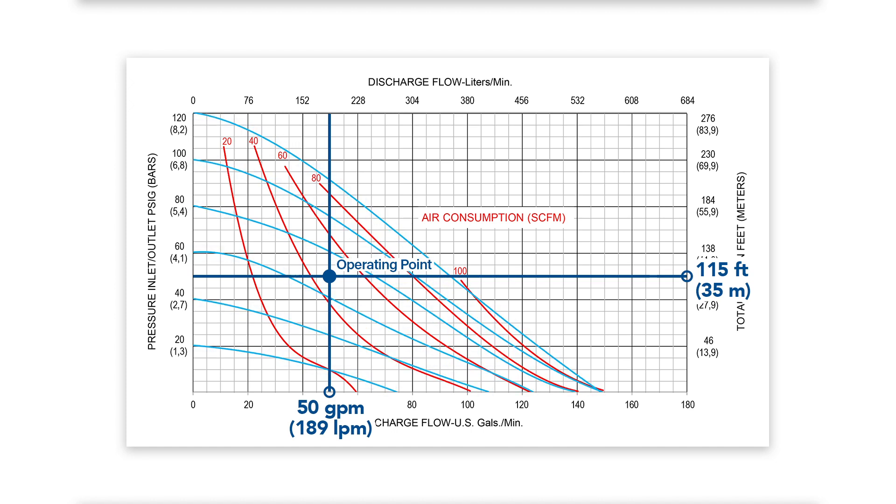In this example, the operating point is in between the 60 PSI and 80 PSI air inlet curves. Thus, the required air inlet pressure to operate the pump would be 70 PSI.